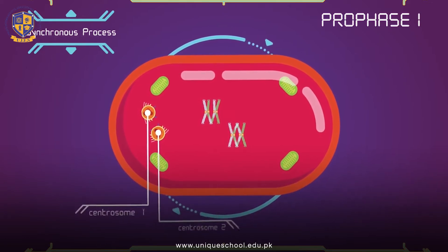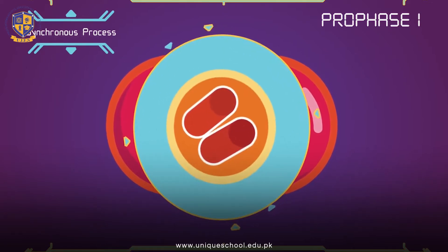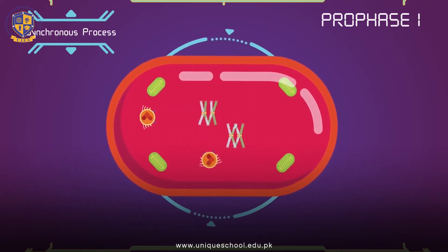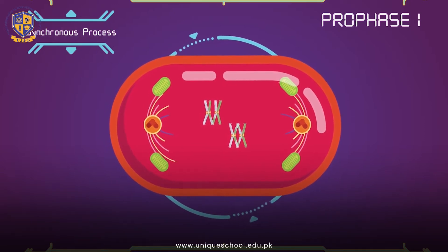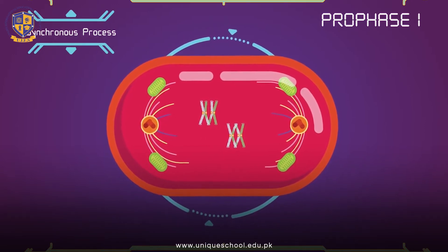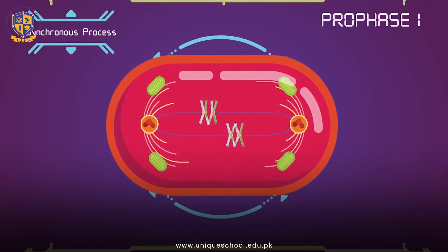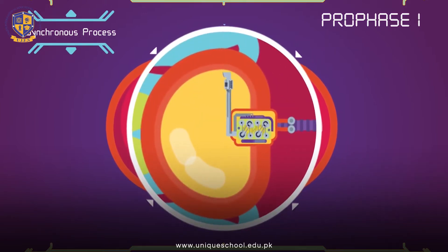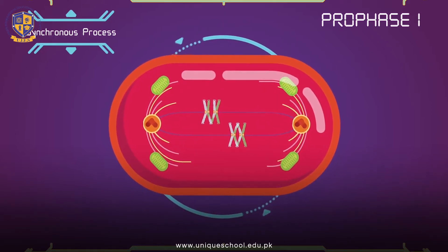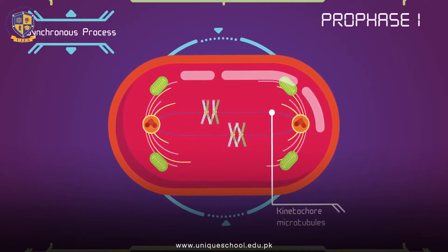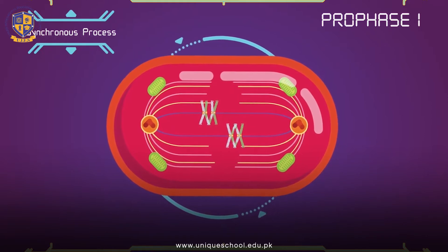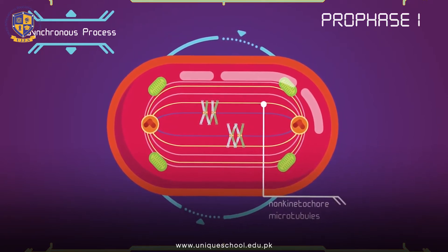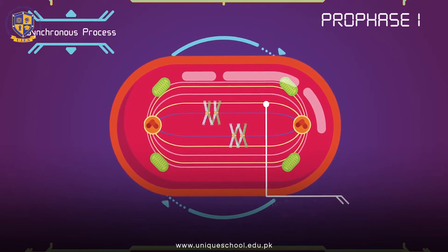During these stages, two centrosomes, each containing a pair of centrioles in animal cells, migrate to the two poles of the cell. The microtubules invade the nuclear region after the nuclear envelope disintegrates, attaching to the chromosomes at the kinetochore. The kinetochore functions as a motor, pulling the chromosomes along the attached microtubule. Microtubules that attach to the kinetochores are known as kinetochore microtubules. Other microtubules will interact with microtubules from the opposite centrosome; these are called non-kinetochore microtubules, or polar microtubules.